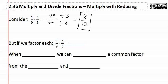But if instead we factor each of these, we can skip this step. Four factors to two times two, nine factors to three times three, six factors to two times three, and five is simply five.